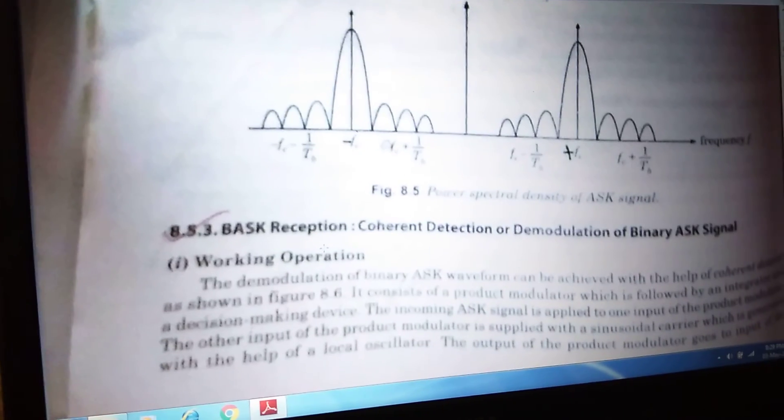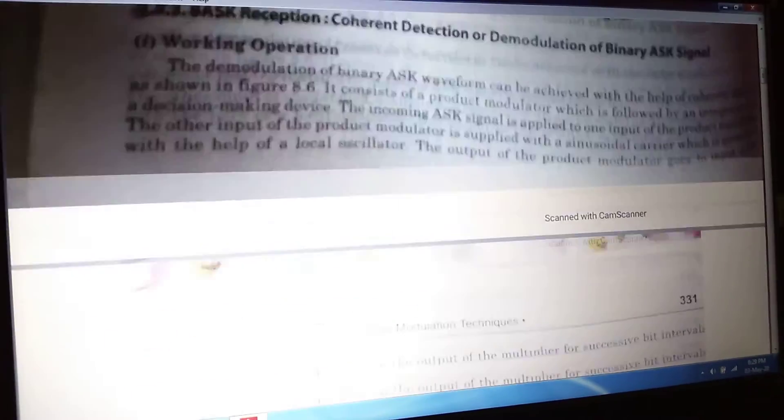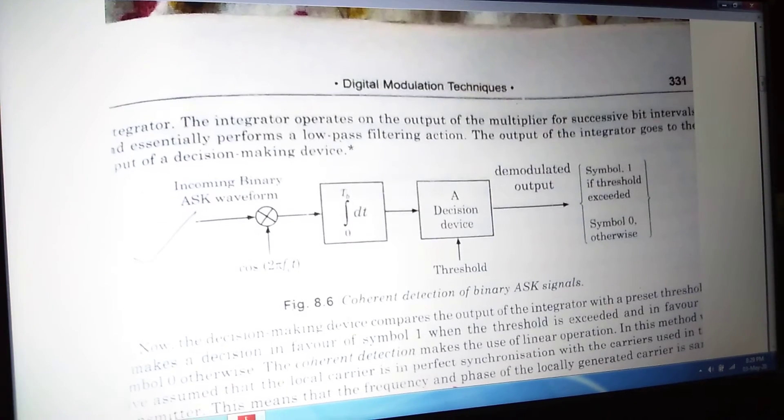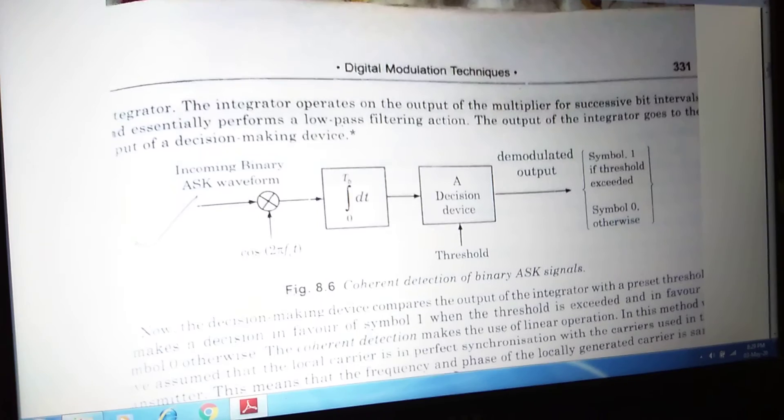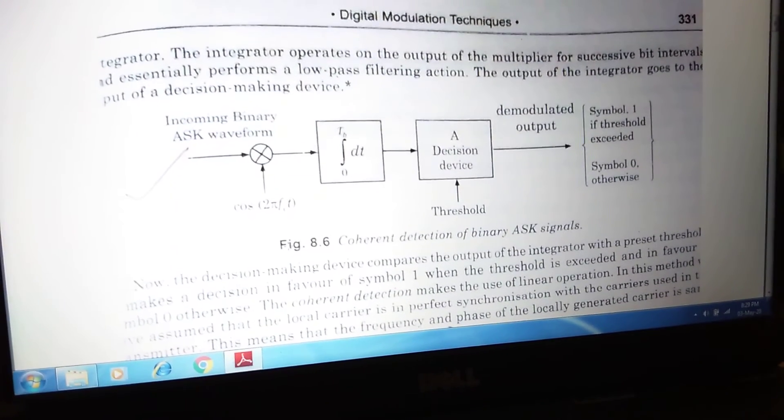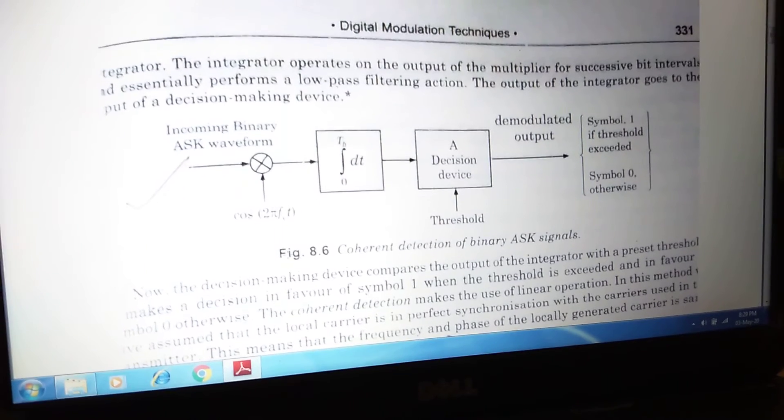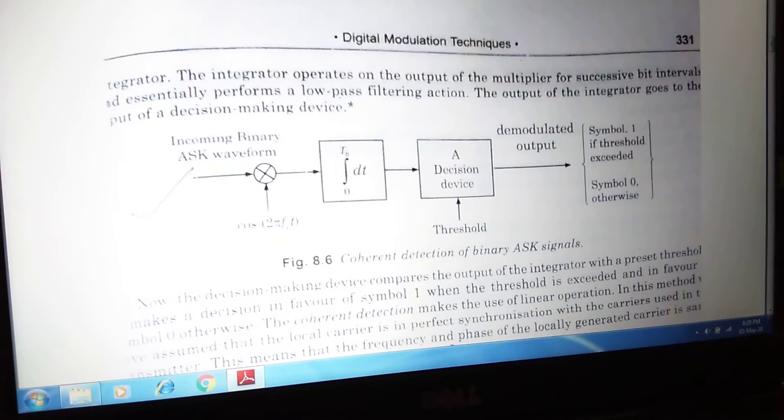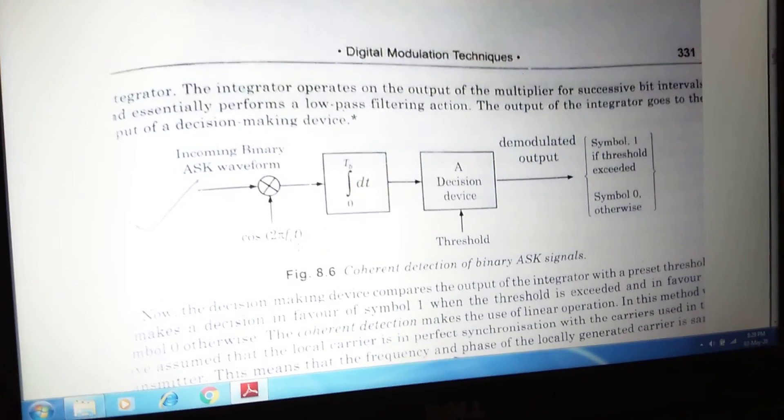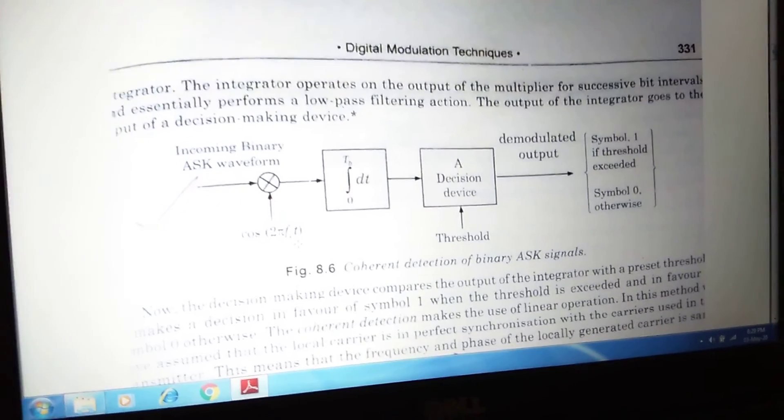Next, we will go to the coherent detection or demodulation of the binary ASK signal. If you see, that is the coherent detection of the binary ASK signal block diagram. What is the block diagram? First, incoming binary ASK waveform, we are giving to a product modulator. Then in this particular product modulator, another input is cos(2π fc t). So that is coherent detection. Same type of carrier frequency will be implemented in the receiver circuit also.